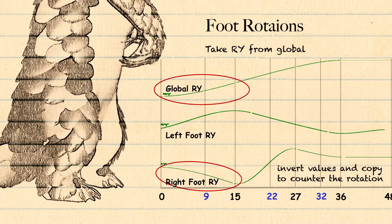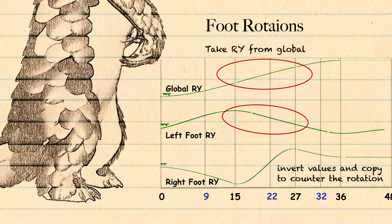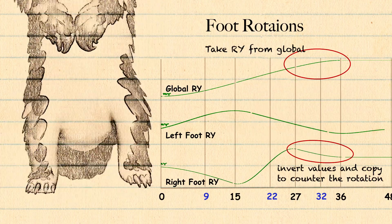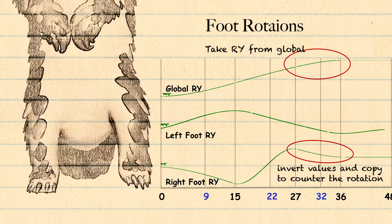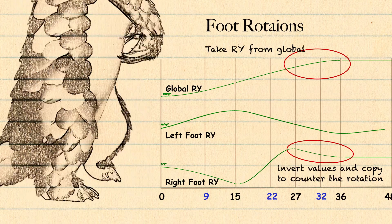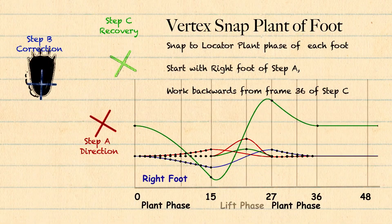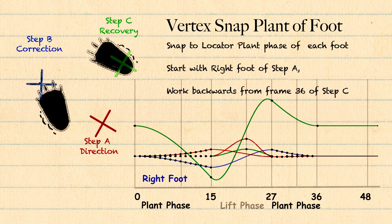Next we copy the rotation value of the global controller and paste and invert it on the plant phase of each foot — this will keep it oriented to world space. On the lift phase of each foot we rotate it to match the direction of the turn. The last stage involves planting the feet down so that they don't move, and we do this by creating some locators.